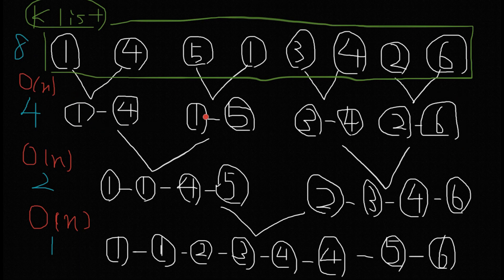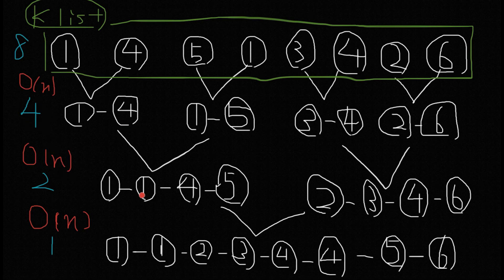Now at the second level we have four linked lists, but again we take two and merge them. We take one-four and one-five and merge them into one-one-four-five, and we take three-four and two-six and merge them into two-three-four-six. Again we touch all nodes once, so time complexity is O(n). We successfully reduce from four to two linked lists. Then we merge those two into one-one-two-three-four-four-five-six — again a linear operation.